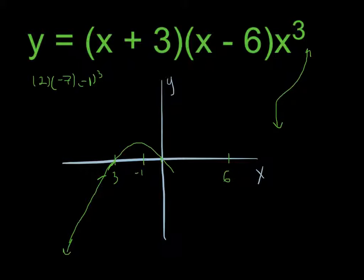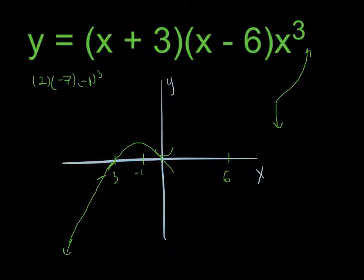Again, I'm confronted with this issue — does it hit at 0 and pass through, or will it bounce back off? I can plug in some value between 0 and 6 and see whether the function is positive or negative.